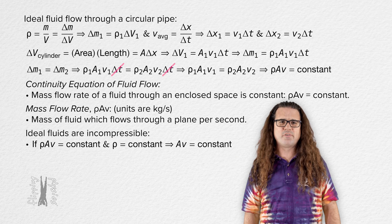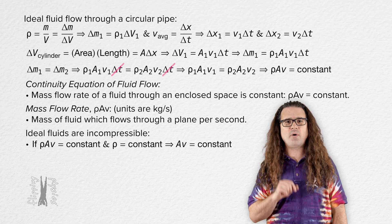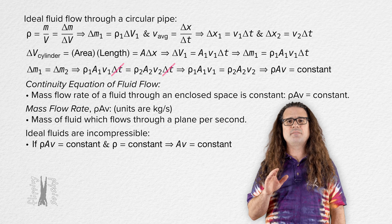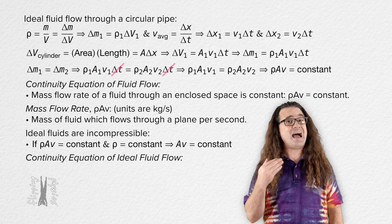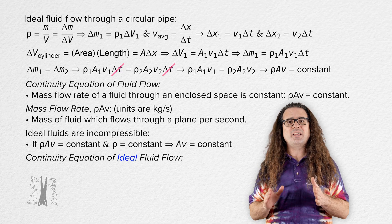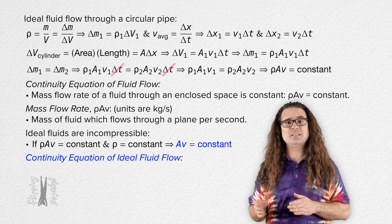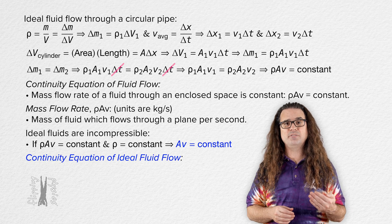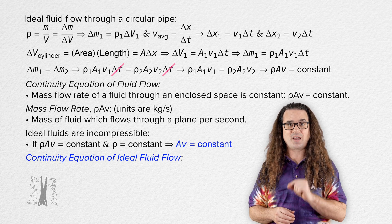Now that we've removed density from the mass flow rate equation, that gives us the continuity equation of ideal fluid flow, which states that the cross-sectional area of a plane times the velocity of the fluid flowing through that plane remains constant.